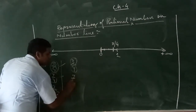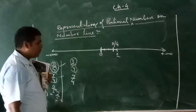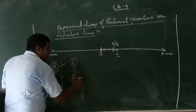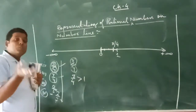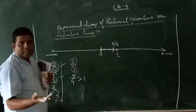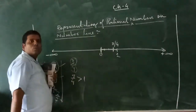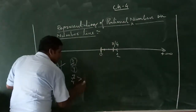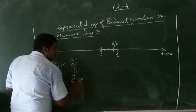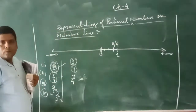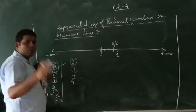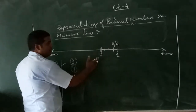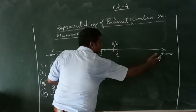Now we will go on to denote seven by four on this number line. In this given number, the value of seven by four is greater than one. In this way, any positive rational number can be represented on the rational number line to the right of zero and between zero and plus infinity.